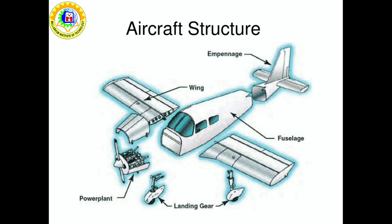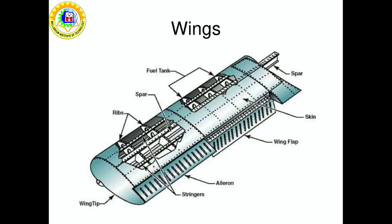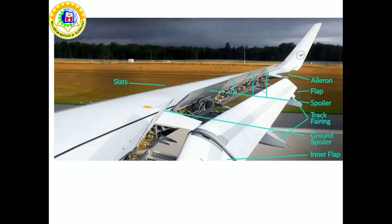The wings are attached to each side of the fuselage and they are the main lifting surfaces that support the aircraft in flight. Various wing designs, sizes, and shapes are used by manufacturers to fulfill a certain need with respect to the expected performance for the particular airplane. Flaps are movable panels on the back of the wing used to increase lift at lower speeds.